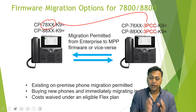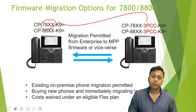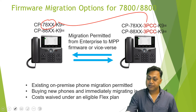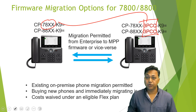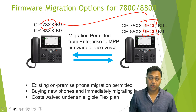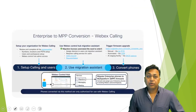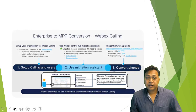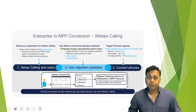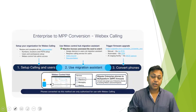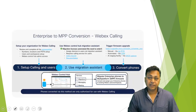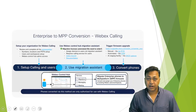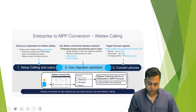When the firmware goes from enterprise to cloud-based, you will see an extension of 3PCC as part of your model number. Enterprise to multi-platform conversions will require you to set up the calling and the users, use the migration assistance available on the WebEx cloud, and then finally convert the phone.